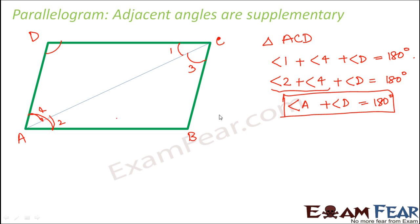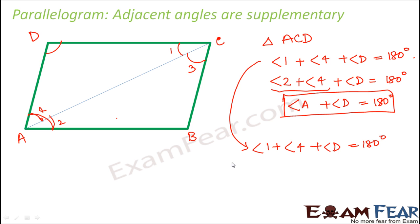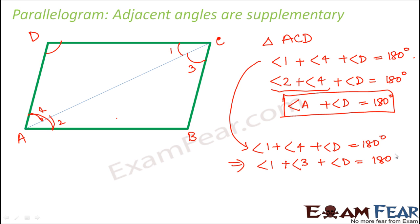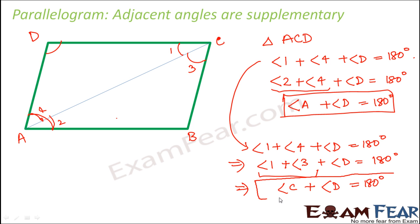In a similar way, we can also prove that angle D plus angle C equals 180 degrees. From the equation angle 1 plus angle 4 plus angle D equals 180 degrees, instead of substituting angle 1 as angle 2, we substitute angle 4 as angle 3, giving angle 1 plus angle 3 plus angle D equals 180. Since angle 1 plus angle 3 is angle C, we prove that angle C plus angle D equals 180 degrees. Therefore, the sum of any two adjacent angles in a parallelogram equals 180 degrees.